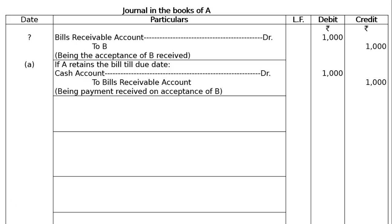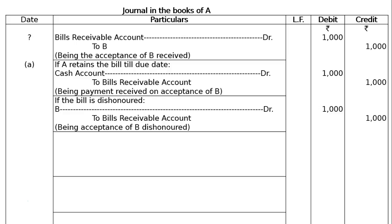Also, from the last line of the question, we need entries if the bill is dishonoured. In Part A (bill kept till due date), if the bill is dishonoured, it will be the reverse of the first entry: B debited to Bills Receivable Account Rs.1000 — being acceptance of B dishonoured. Now for Part B — if A discounted the bill with his bankers.